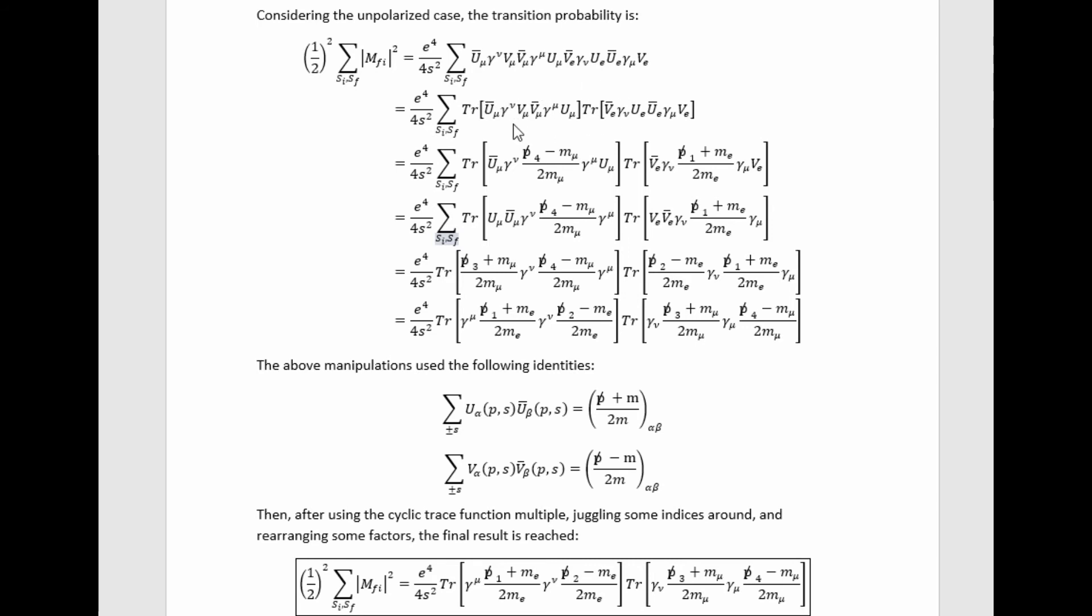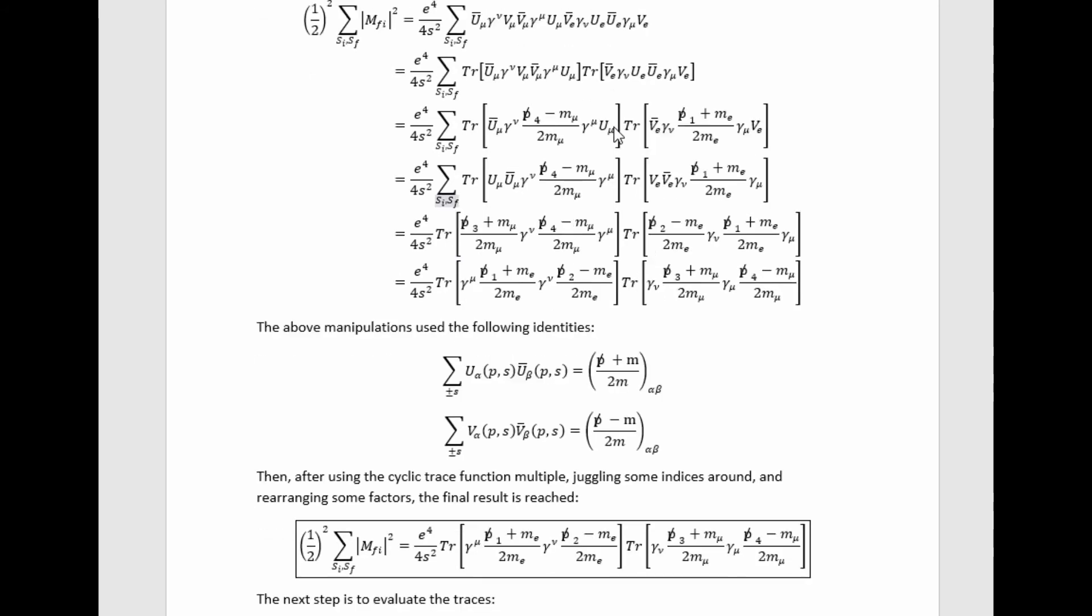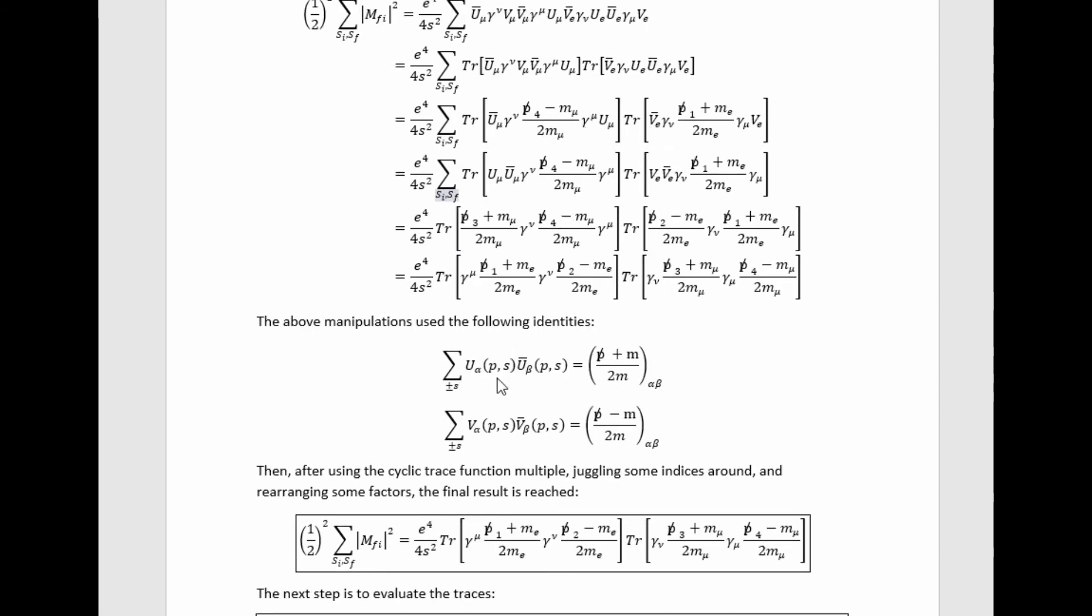The easiest way to evaluate what this spin summed expression actually is is to recognize it's a factor of two scalar quantities and we can stick traces in there without changing anything. And then use the cyclic property of the trace in these two identities to re-express these traces in a form that's easy to evaluate.